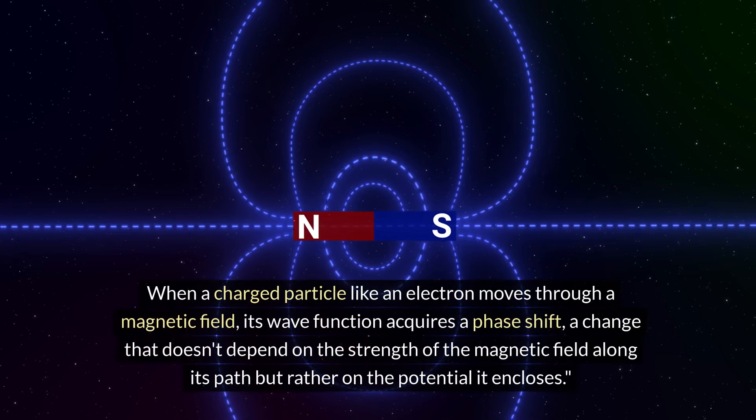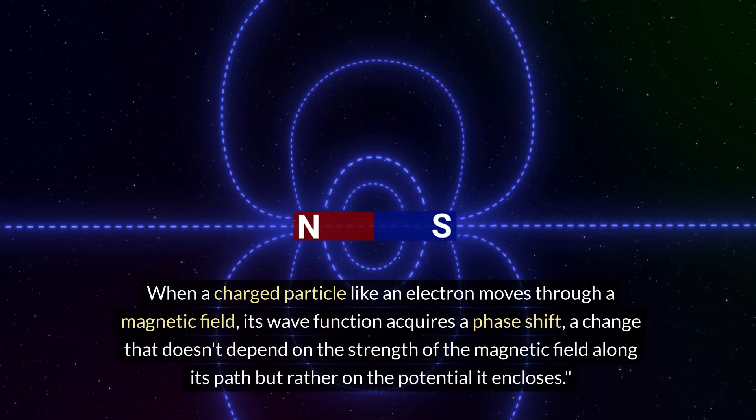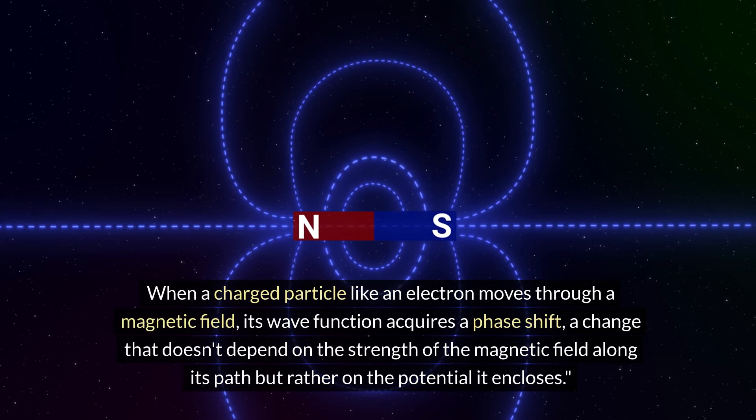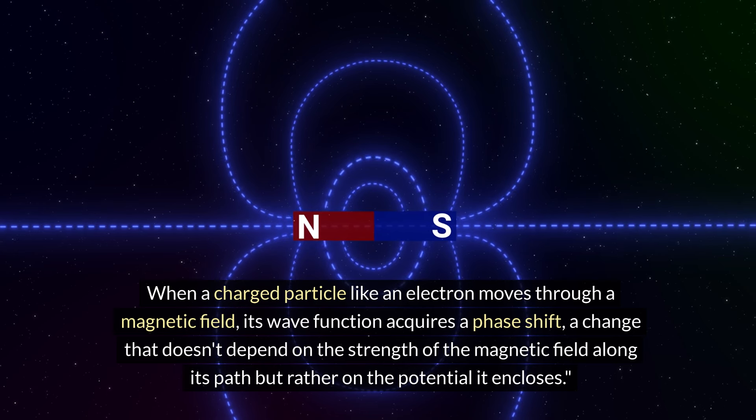When a charged particle like an electron moves through a magnetic field, its wave function acquires a phase shift, a change that doesn't depend on the strength of the magnetic field along its path, but rather on the potential it encloses.